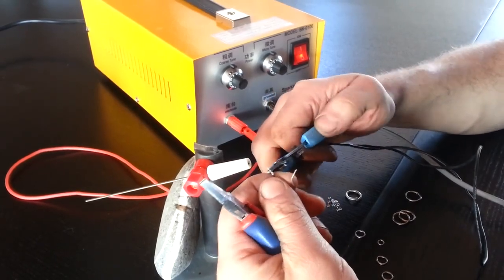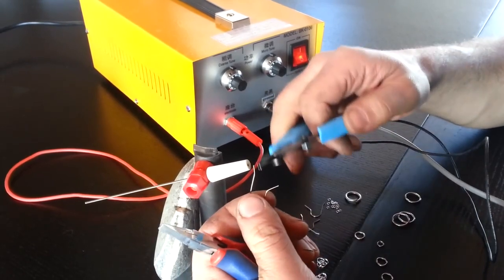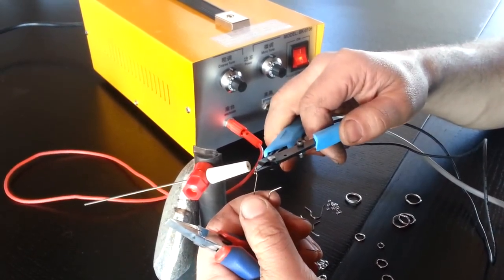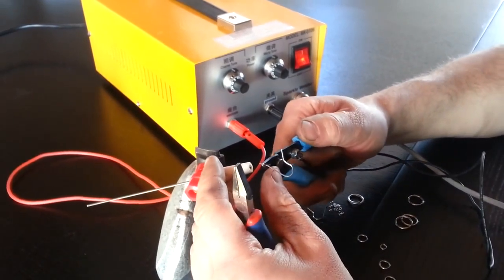First thing I will demonstrate is how to use the welder to finish the tip of ear wires to make a nice rounded end that goes through sensitive ears without damage.